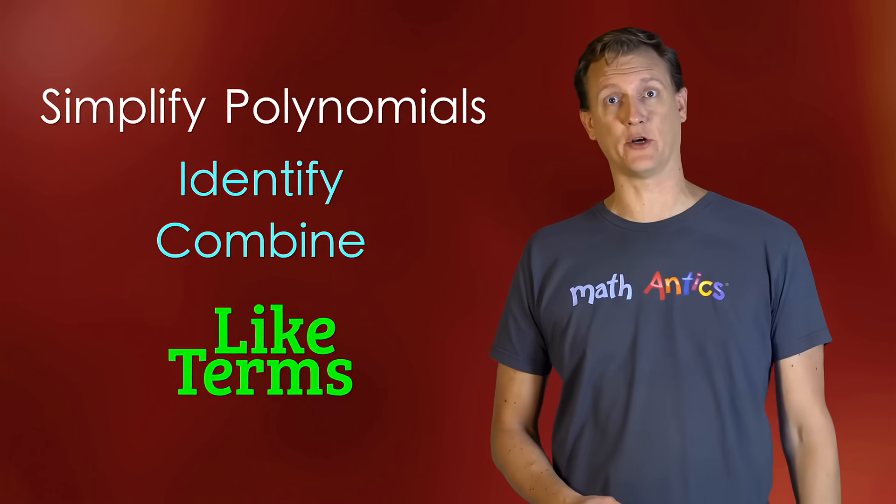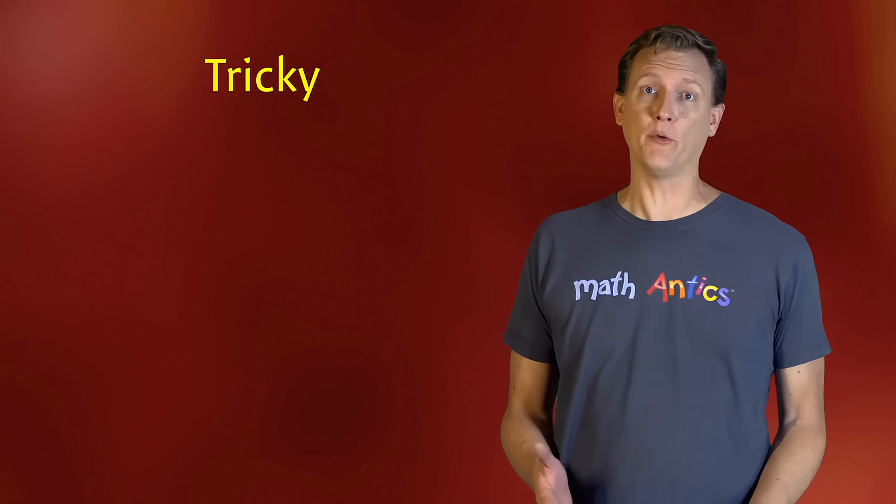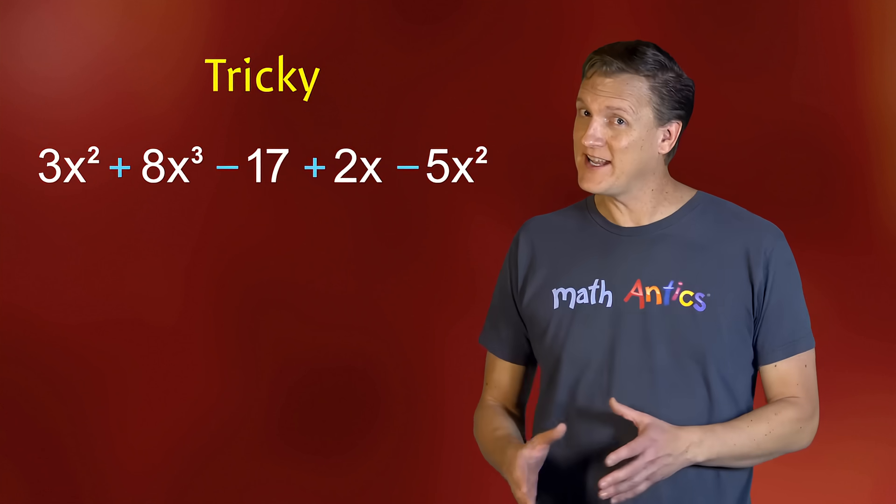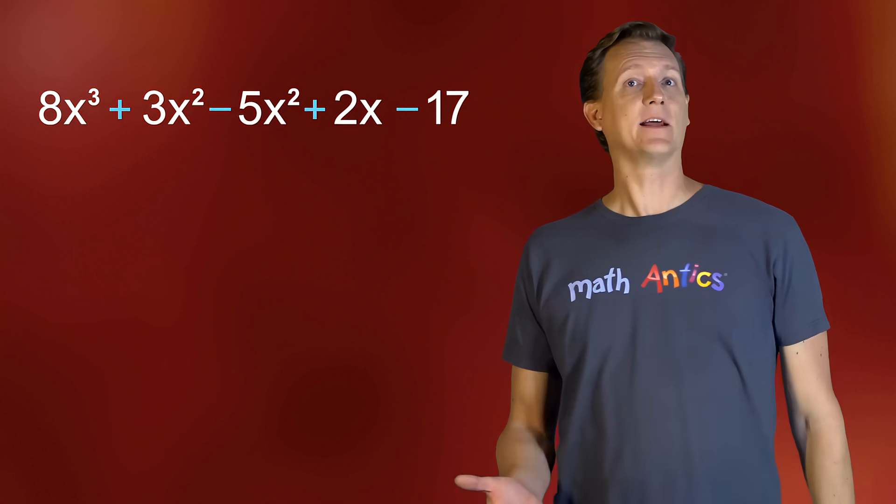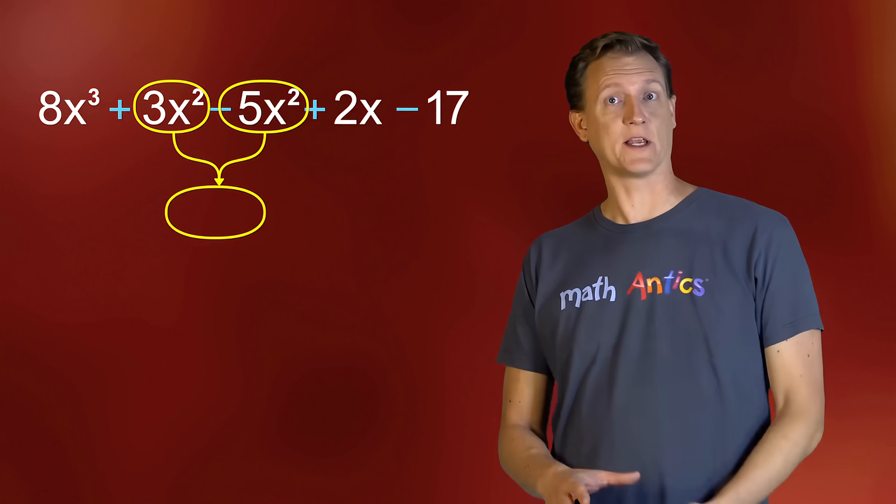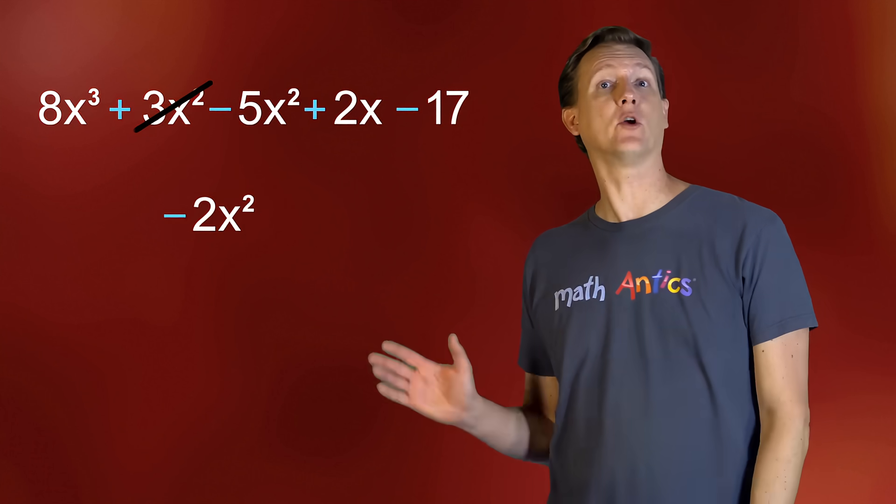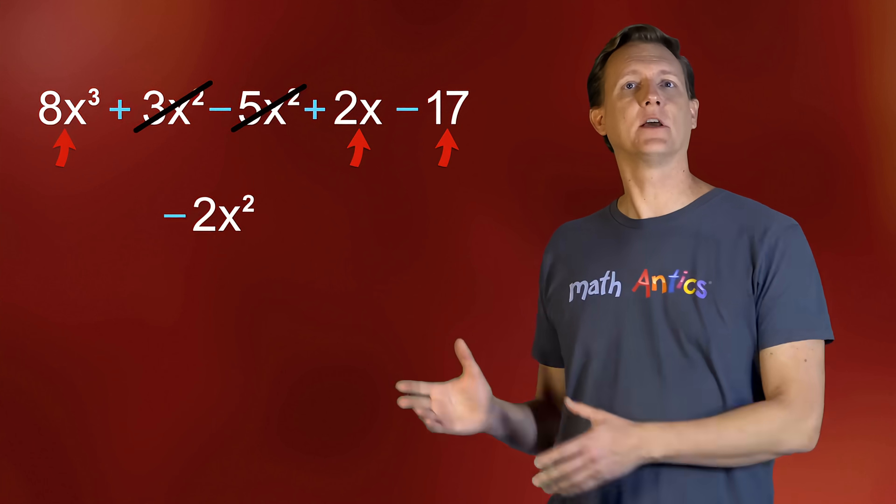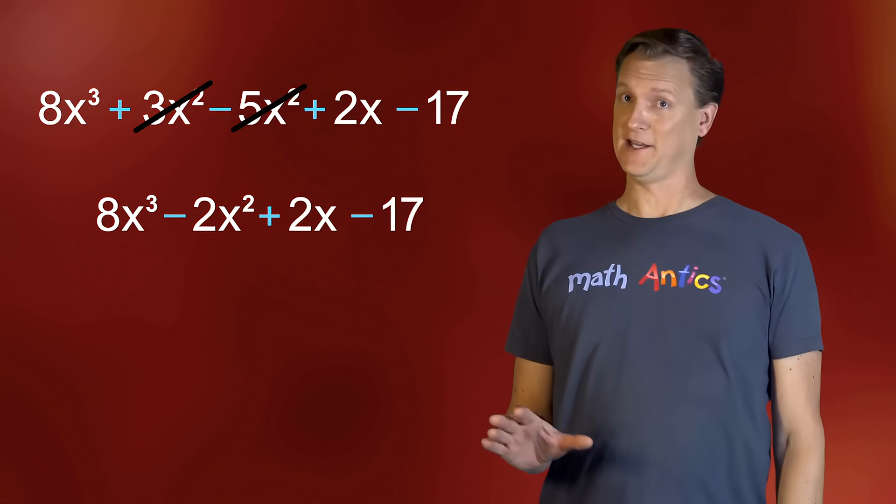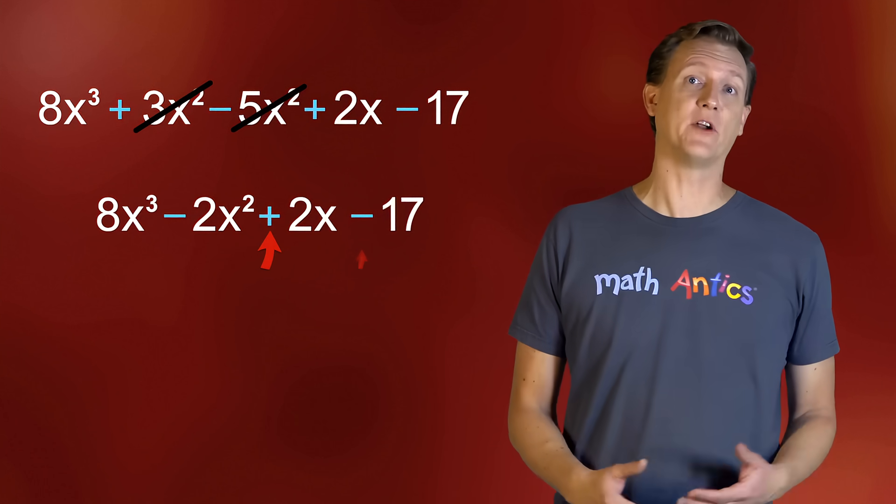Alright, so now you know how to simplify polynomials by identifying and combining like terms. It can sometimes be a little tricky since complicated polynomials may have many different terms that are not necessarily in order by their degree. That means you may need to do some rearranging as you look for terms that you can combine. I like to look for pairs that I can combine and then, once I combine them into a single term in my simplified polynomial, I cross them off in the original polynomial so I know that I've already taken care of them. Any terms that can't be combined just come down into the simplified polynomial as is. Oh, and to make things easier, don't forget to treat each of the terms as either positive or negative depending on the sign right in front of it. So that's how you simplify polynomials. And now that you know what to do, it's important to practice simplifying some polynomials on your own so that you really understand it.